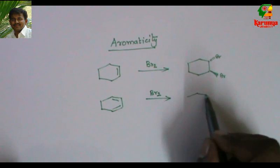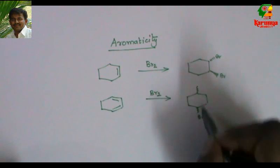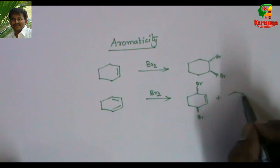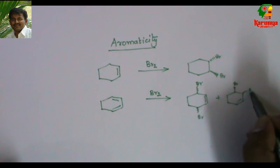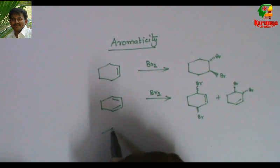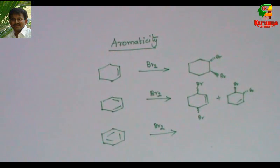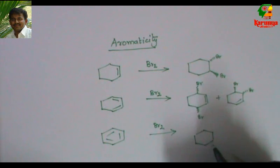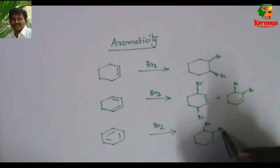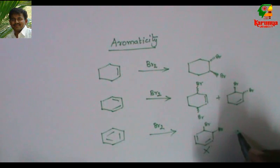If I add bromine to the diene, depending on the condition I will get two products — like this, or one, like this. This is the thermodynamic product and this is the kinetic product; at high temperature you will get the thermodynamic product. Now I go for a triene and I add bromine to this. The product I expect is a dibromide like this.